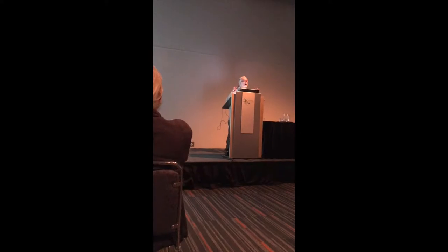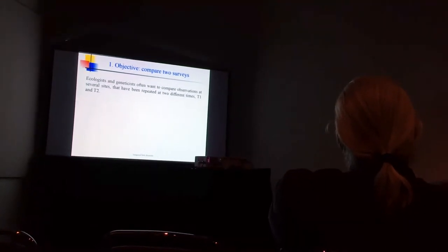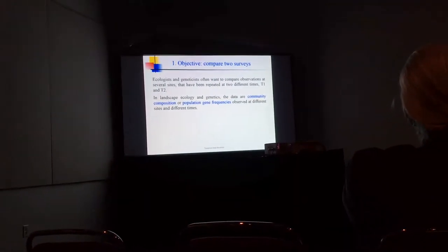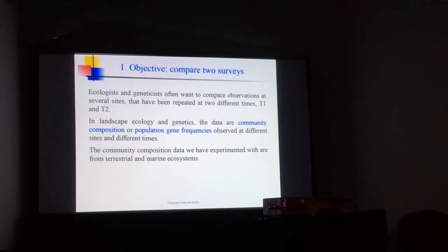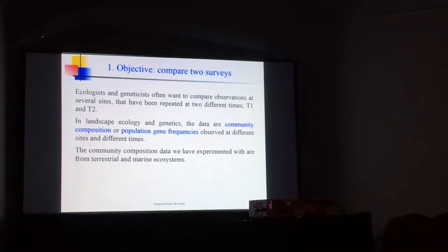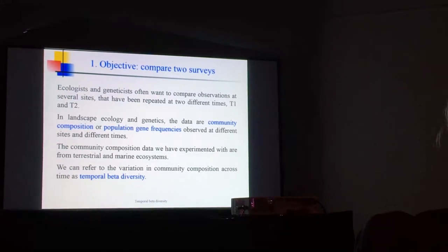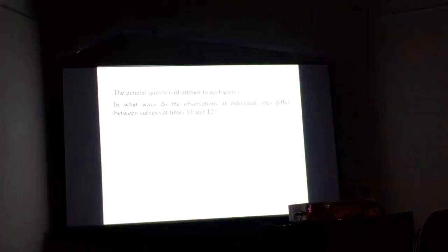The objective is to compare two surveys. Ecologists and geneticists often want to compare observations at several sites that have been repeated at two different times, T1 and T2. In landscape ecology and genetics, the data are community composition or population gene frequencies observed at different sites and different times. The general question of interest is: in what ways do the observations at individual sites differ between surveys at time one and time two?